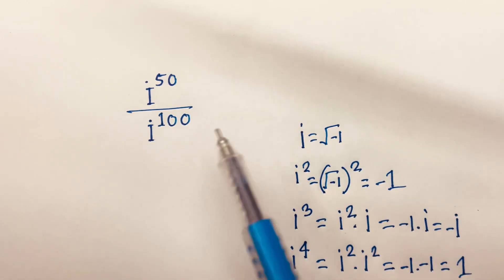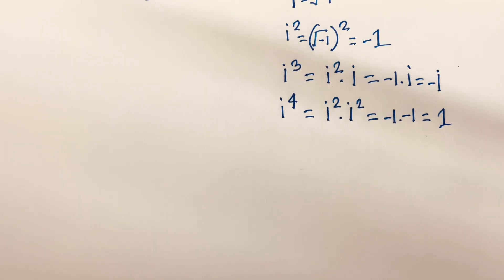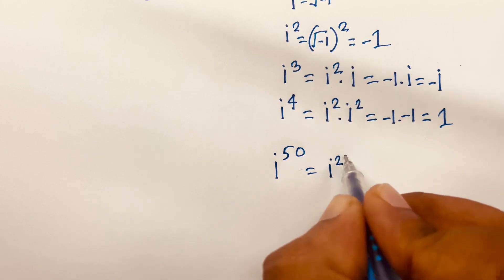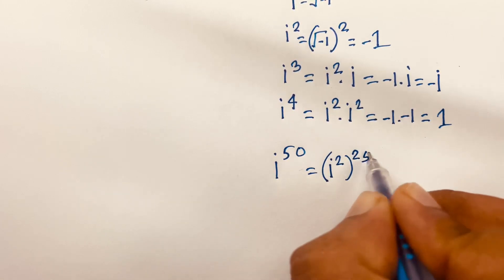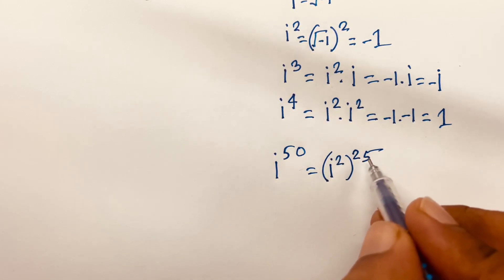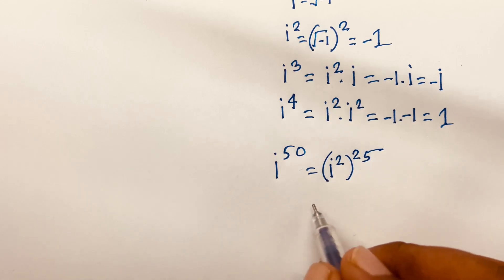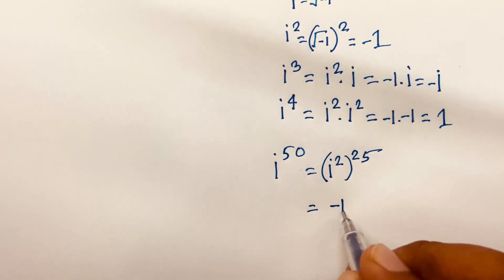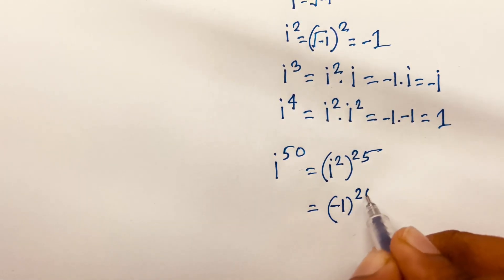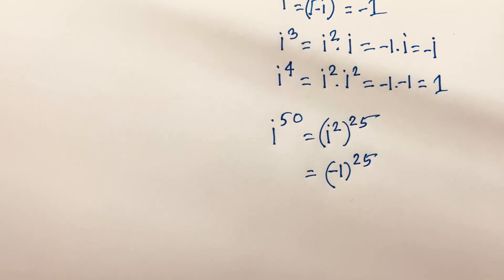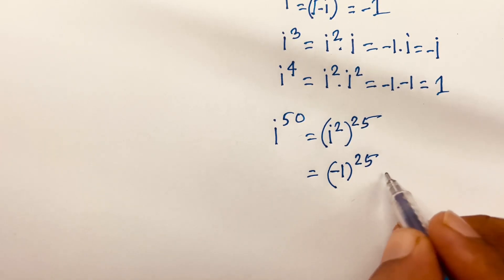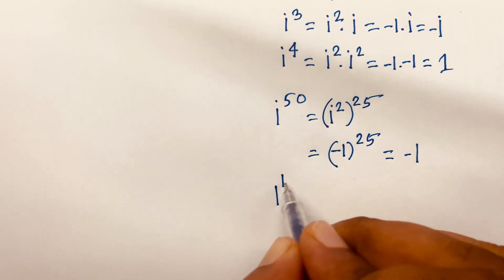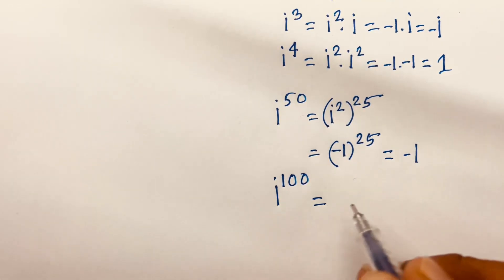Now we find i to the power 50. i to the power 50 equals (i²)^25, because 2 times 25 equals 50. Since i² = -1, this becomes (-1)^25. Since 25 is an odd number, (-1)^25 equals -1.